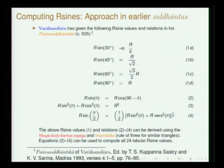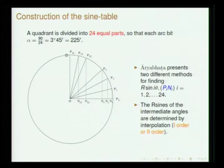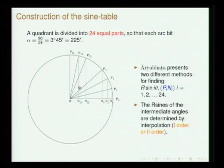In Panchasiddhantika we have values of sine very clearly stated - sine 30, sine 45, sine 60, and so on. We saw these can be easily determined by constructing a certain triangle. Based on these values of sines and the set of equations, one can generate the 24 tabular R-sines discussed while dealing with Aryabhata. Usually a quadrant is divided into 24 parts - P0, P1, P2, and so on - each taken to be 3 degrees and 45 minutes, or 225 minutes. The idea is to obtain the sine values at these intervals.